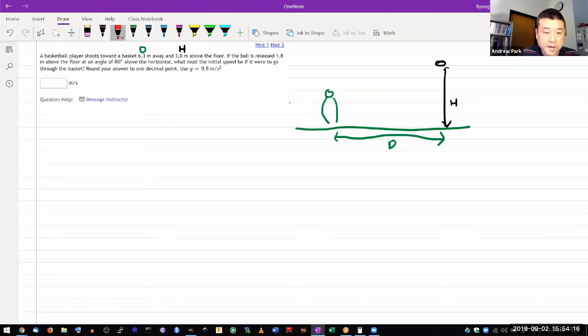The basketball is released at another height above the floor and the question gives us an angle at which it's launched. And it's asking for the initial speed of v naught.